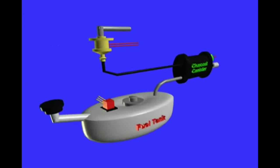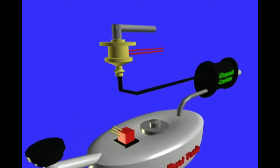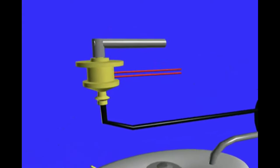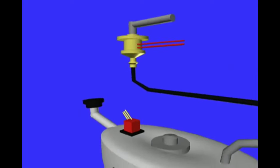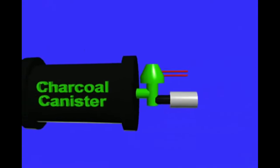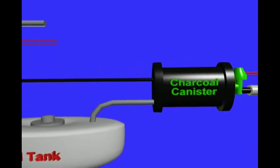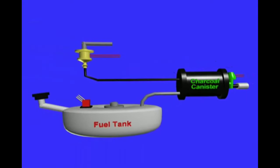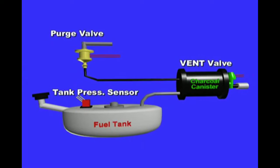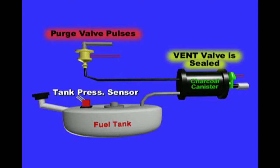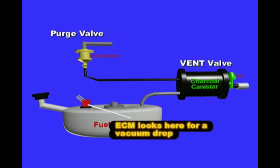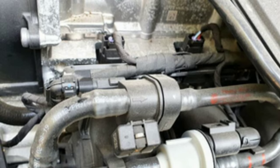The EVAP system is a closed system in your vehicle designed to capture vapors from the fuel tank and keep them from leaking out into the atmosphere. Gasoline vapors are harmful to the environment and can contribute to smog and air pollution, making proper maintenance of this system essential.